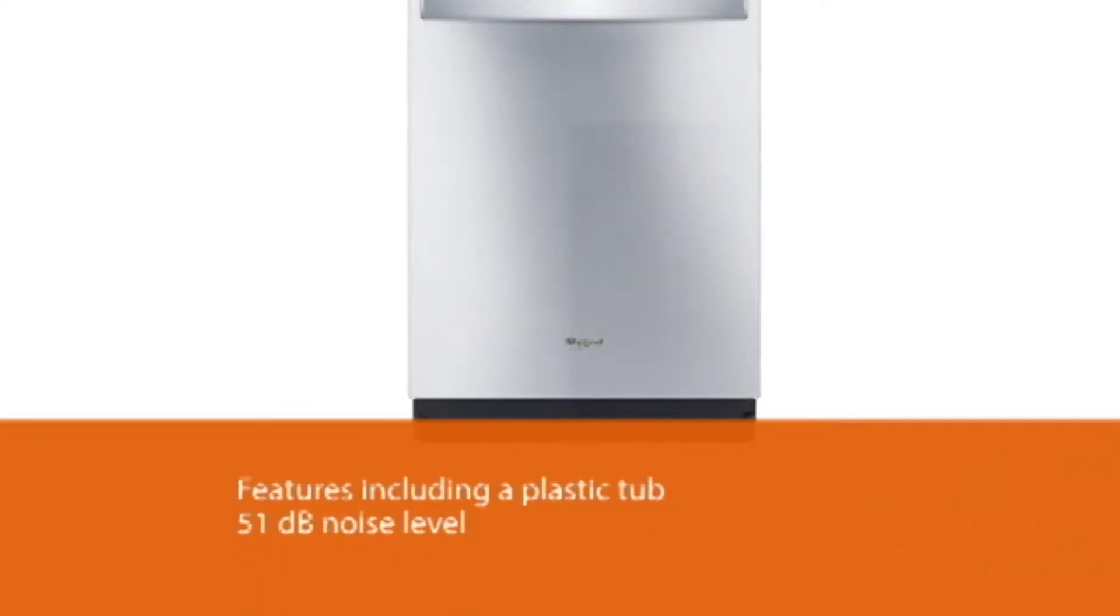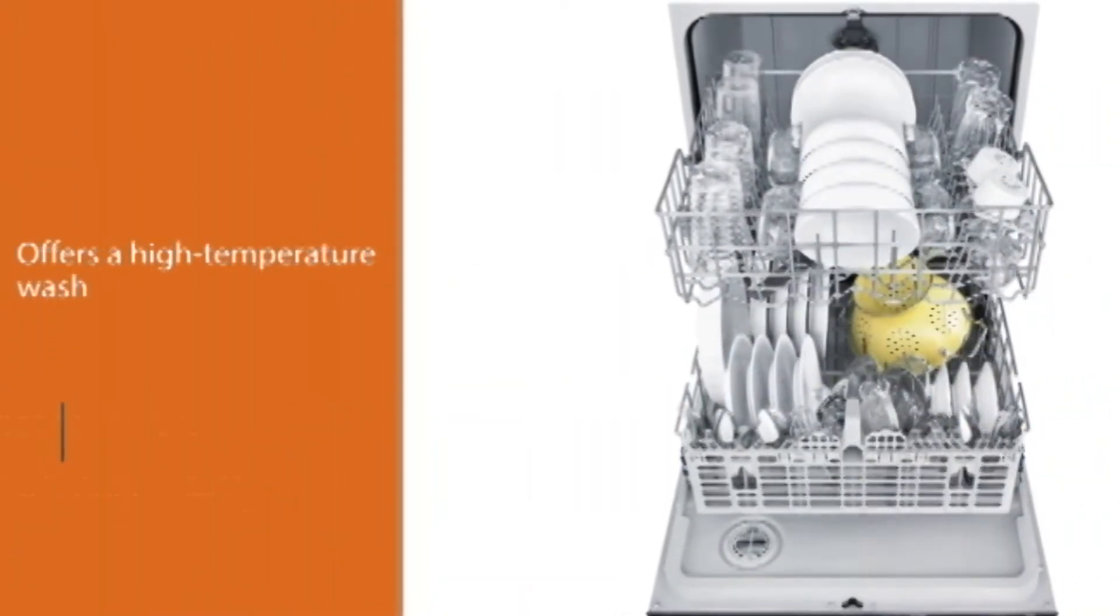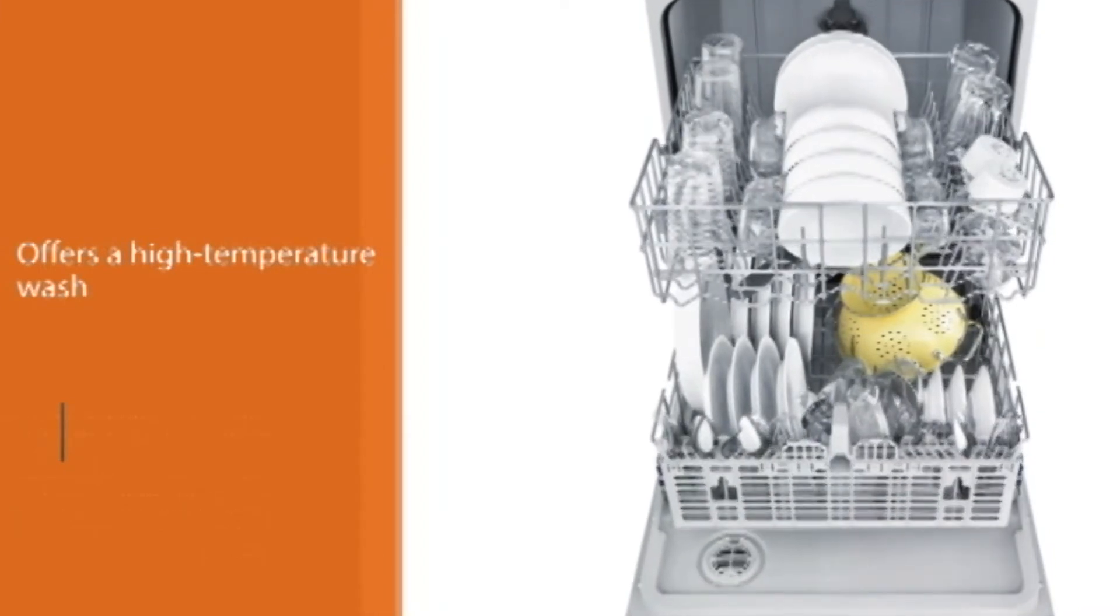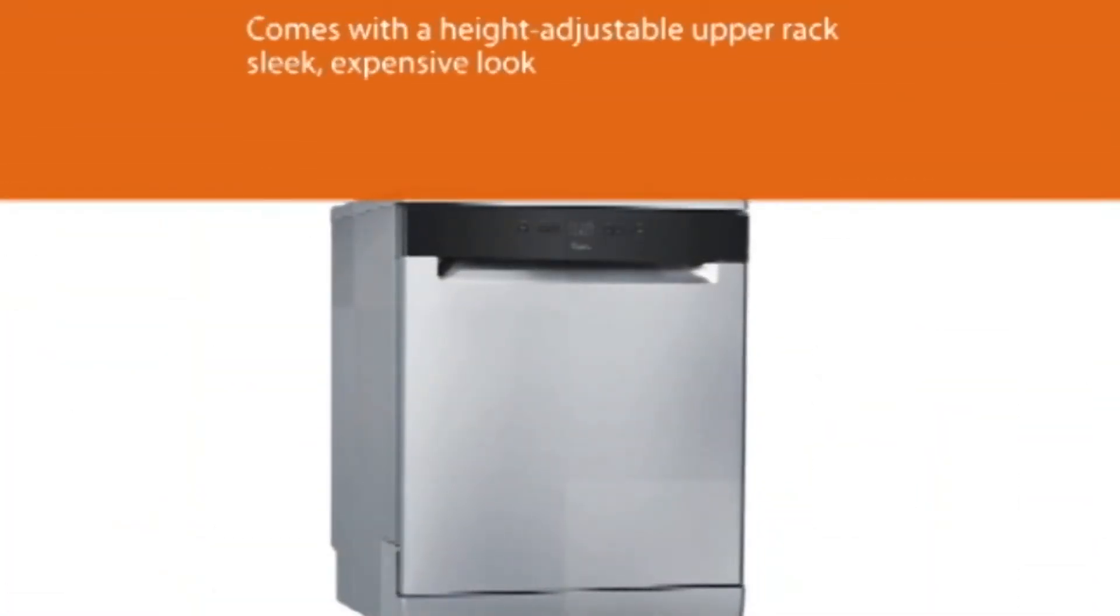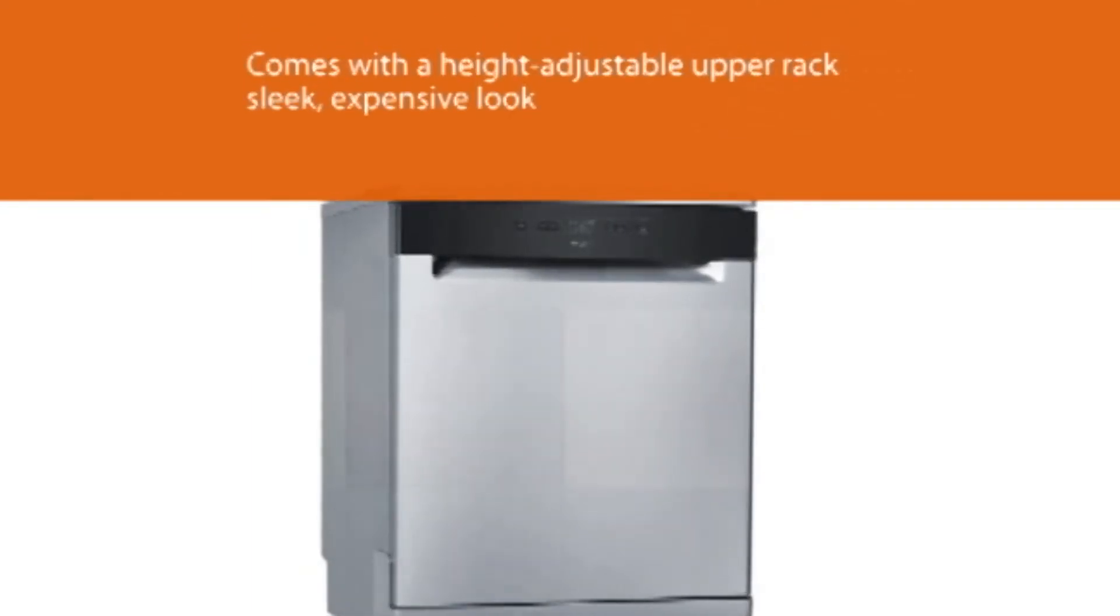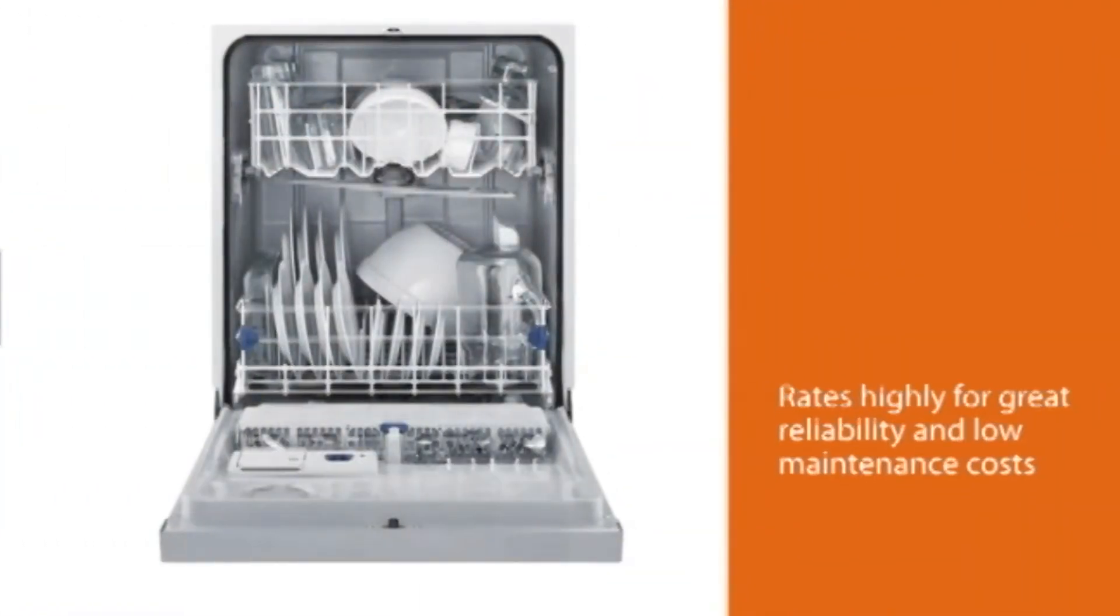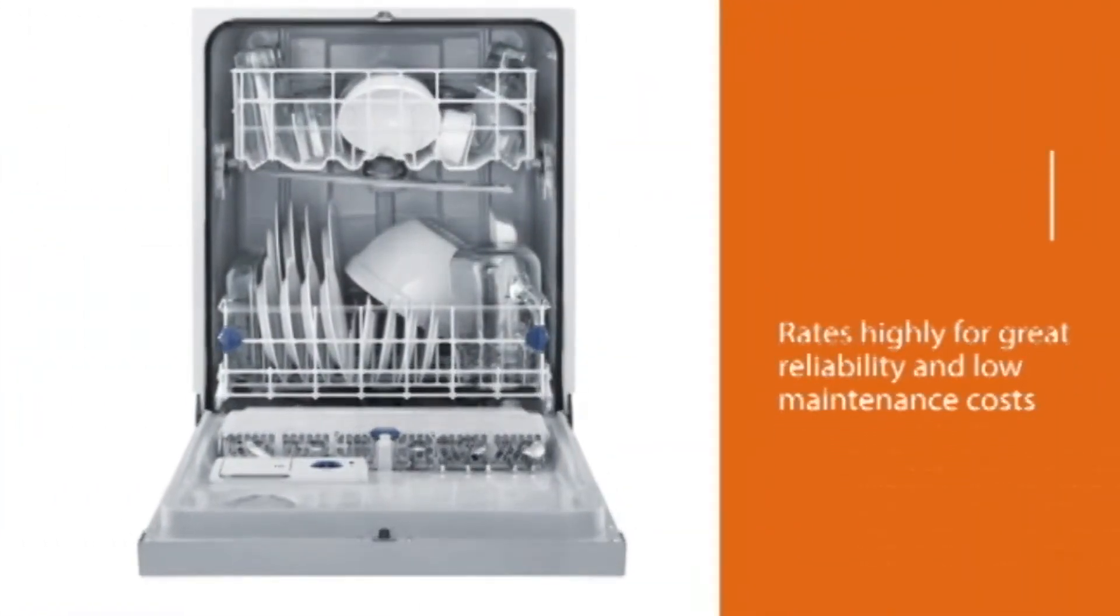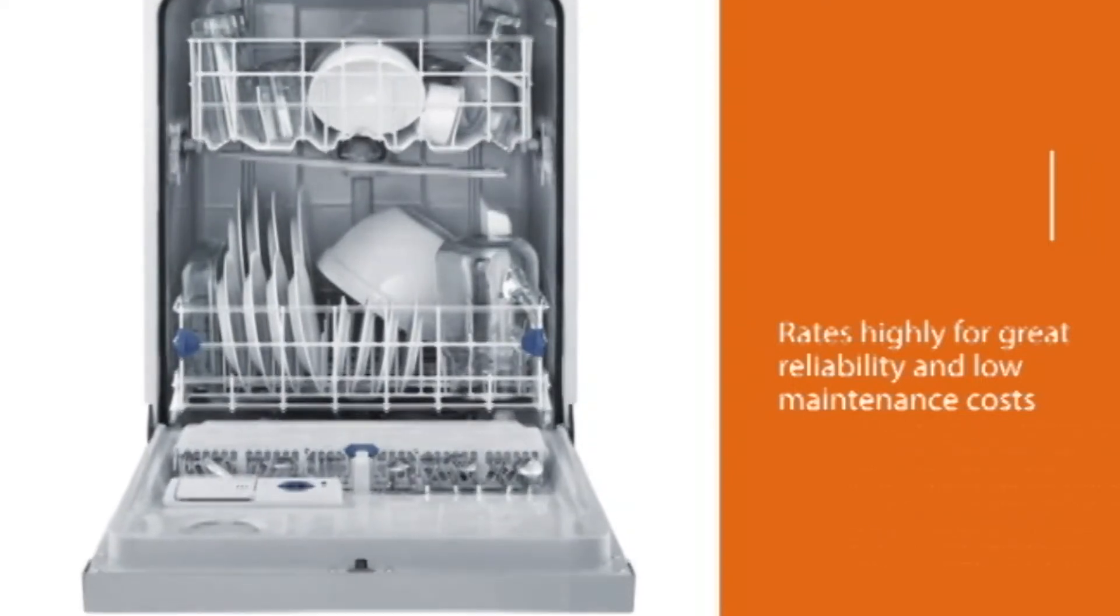Whirlpool keeps its price low with design features including a plastic tub and a 51 decibels noise level. There's a high-temperature wash to get baby bottles ultra-clean, and sensor and one-hour cycles to help you get the exact type of wash you need. You also get a height-adjustable upper rack for increased flexibility. This dishwasher's hidden controls give it a sleek, expensive look, and Whirlpool consistently rates highly for great reliability and low-maintenance costs.